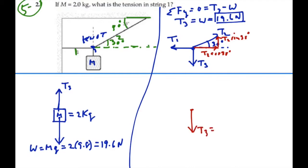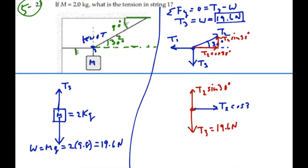So we have a new free body diagram. Tension 3, equal to 19.6 Newtons, goes down, balanced by the vertical component of tension 2, which is T2 sine 30 in the upward direction. Horizontally, we have T2 cosine 30 in the positive x direction, balanced by all of tension 1 going in the opposite direction. As a result of these four forces, there is no movement of the knot.